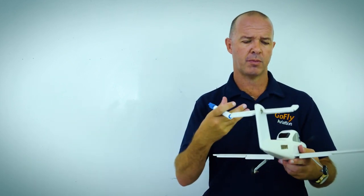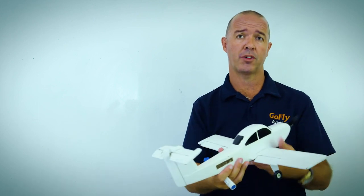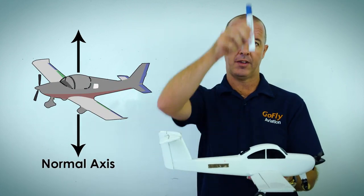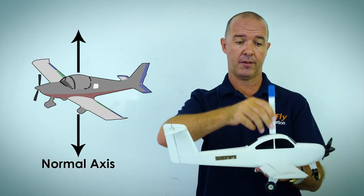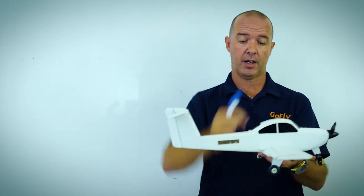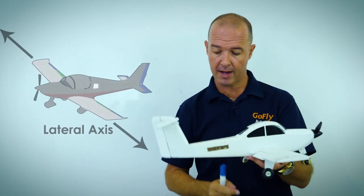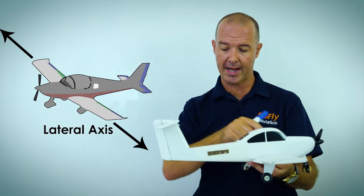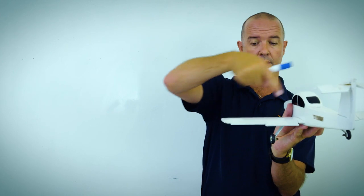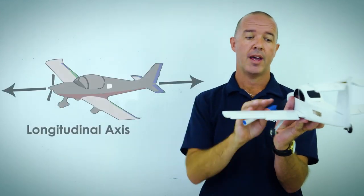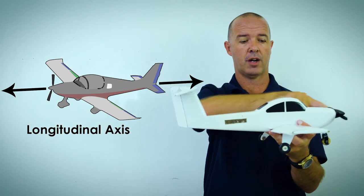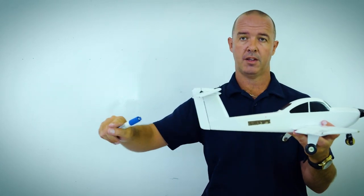This might seem a bit confusing at first, but it'll make more sense towards the end of the lesson. The first axis is our normal axis, which moves from the top to the bottom of the aircraft. Then we have our lateral axis, which moves along the wing from one wing to the other. We also have our longitudinal axis, which moves from the front of the aircraft all the way to the back.